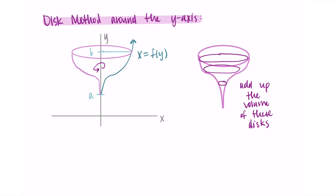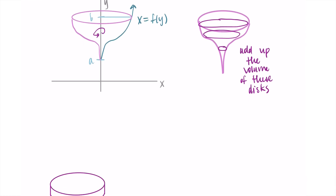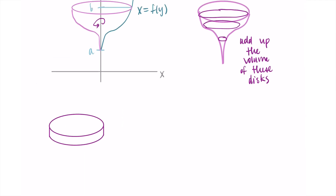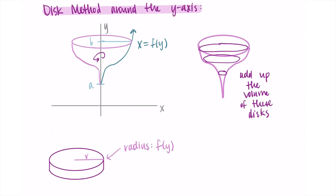Let's talk about how to find volume to make sure we're feeling good. I've drawn some little discs here, and we're adding up their volumes. These discs have a radius, and that radius is just our function. On our graph, the radius is the distance from the y-axis out to the function — from the center to the edge of the disc — so we just take the function itself as our radius.